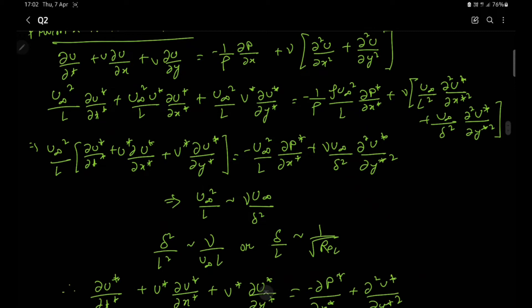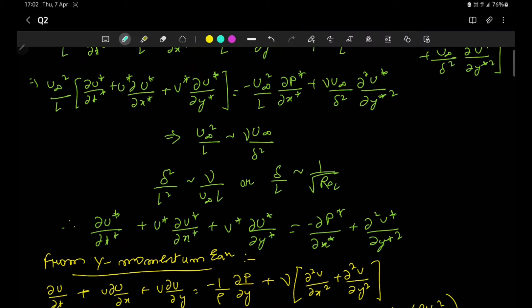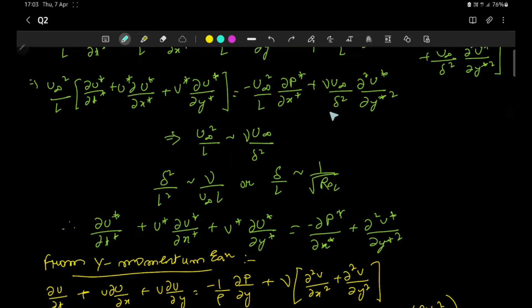Rearranging these equations and applying the order-of-magnitude assumption — that u∞²/L is of the same order as ν·u∞/δ² — we can show that δ²/L² is of the same order as ν/(u∞·L), or equivalently δ/L ~ 1/√Re. Using these assumptions, we are finally left with: ∂u*/∂t* + u*·∂u*/∂x* + v*·∂u*/∂y* = −∂p*/∂x* + ∂²u*/∂y*².